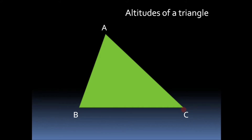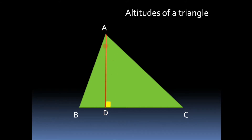We have to understand what is the altitude of a triangle. There are three vertices of triangle ABC: vertex A, vertex B, and vertex C. Altitude means a perpendicular drawn from a vertex of a triangle to its opposite side. So if we draw perpendicular AD from vertex A to its opposite side BC, then AD is called the altitude of the triangle.